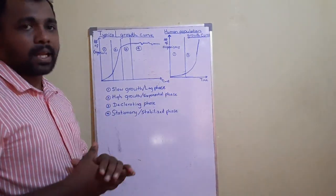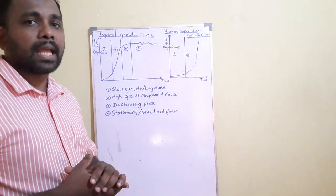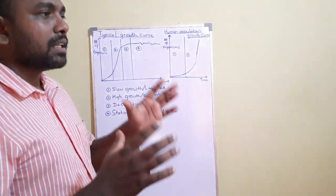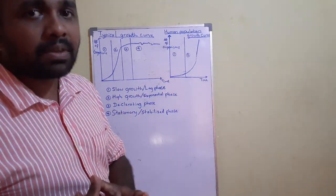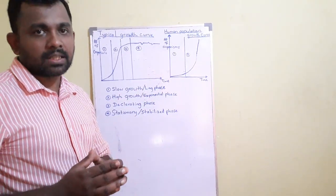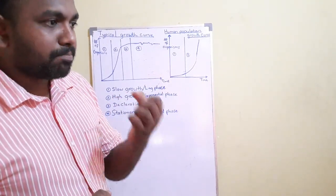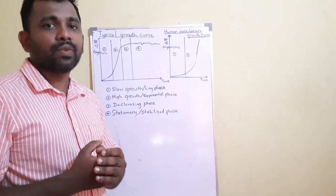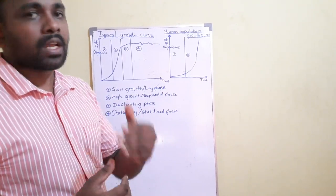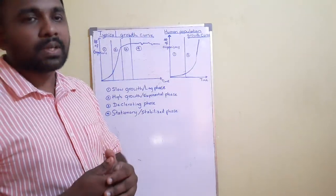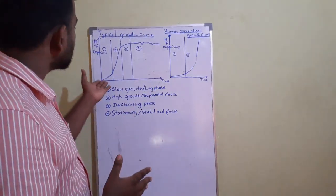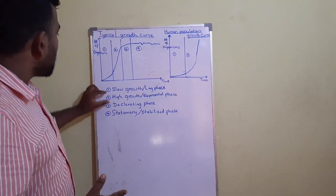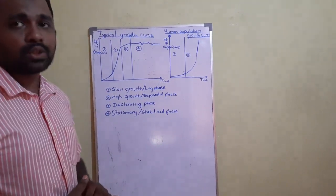In the slow growth phase, the number of reproductively capable individuals is very low, and the organisms are not well adapted to their environment. Therefore, their ability to extract resources from the environment is very limited, resulting in a low reproductive rate, and the population growth rate remains at a very low level.